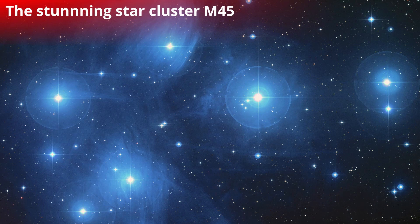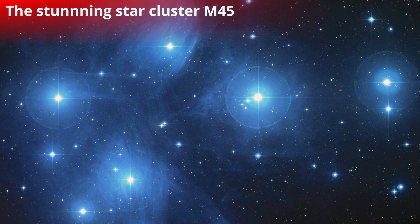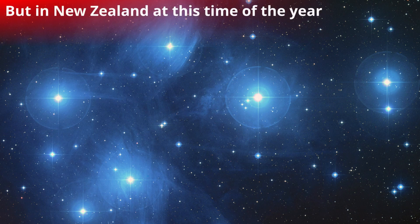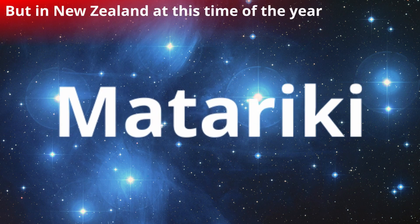The stunning star cluster that's in the early morning just starting to rise in the northeastern sky, sometimes known as M45, sometimes Subaru, sometimes the hen and the chicken, but in New Zealand at this time of the year it's known as Matariki.